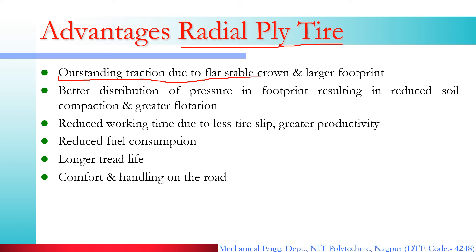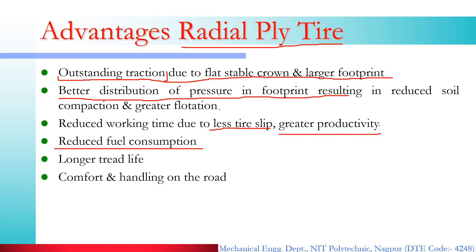With radial ply tires, you can get better traction because you have a flat, stable, and larger footprint with ground contact. With this type of radial ply tire, better contact with the road gives you more traction, meaning your vehicle has better grip on the road. There is also better distribution of pressure on the road, and the pressure is well distributed, which results in less wear on the tire.